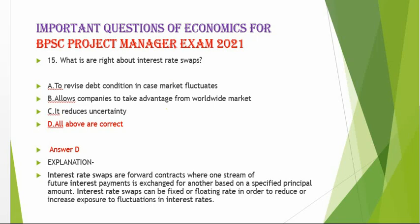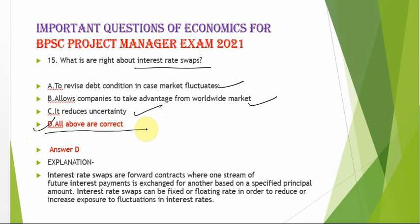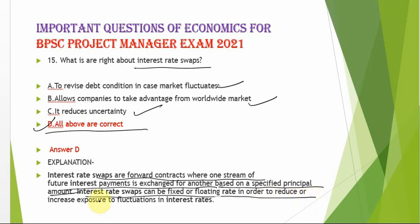What is right about interest rate swaps? Option A: to revise debt conditions in case the market fluctuates (correct). Option B: to allow companies to take advantage from worldwide markets (correct). Option C: it reduces uncertainty (correct). All options are correct, so option D is the answer. Interest rate swaps are forward contracts where one stream of future interest payments is exchanged for another, and can be fixed or floating rate.